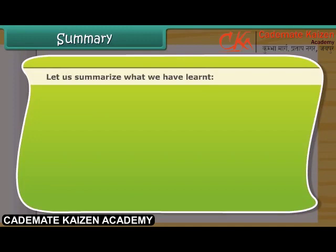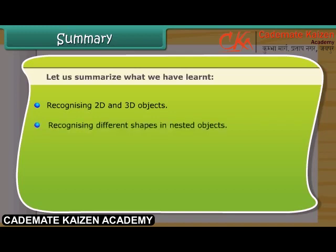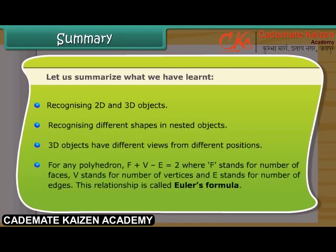Let us summarize what we have learned: recognizing 2D and 3D objects, recognizing different shapes in nested objects, understanding that 3D objects have different views from different positions. For any polyhedron, F plus V minus E equals 2, where F stands for number of faces, V stands for number of vertices, and E stands for number of edges. This relationship is called Euler's formula.